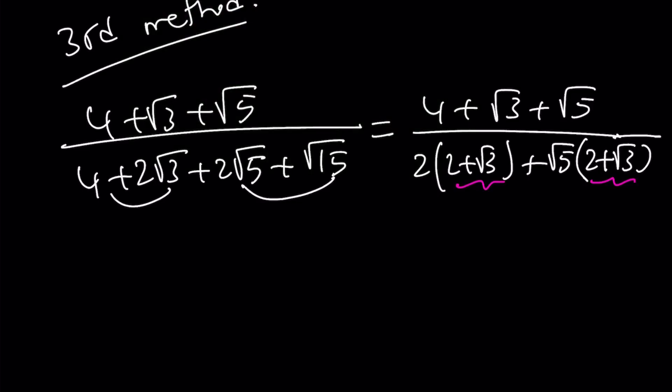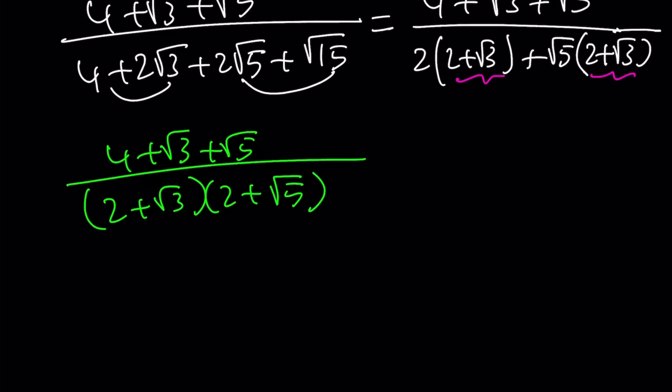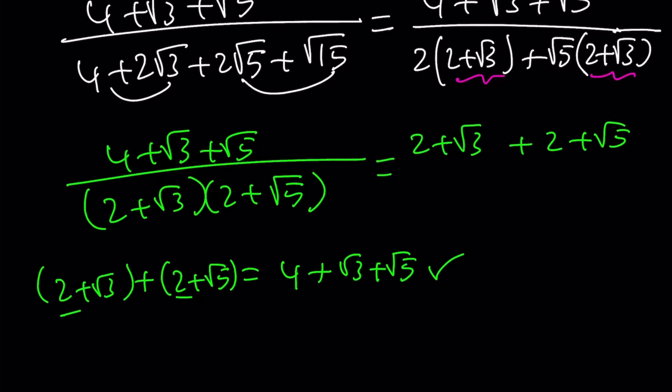Now we have 2 plus root 3. Again, the numerator is going to be unchanged for now until I can clearly see what's going on. 2 plus root 3 can be factored out, and the other factor is going to be 2 plus root 5. Now, notice that the sum of 2 plus root 3 and 2 plus root 5 is 4 plus root 3 plus root 5. This is what I'm talking about: 2 plus root 3 plus 2 plus root 5 is equal to 4 plus root 3 plus root 5, which is the numerator. What does that tell you? It tells you to break down the numerator into 2 plus root 3 plus 2 plus root 5, and then something magical or mathematical is going to happen.